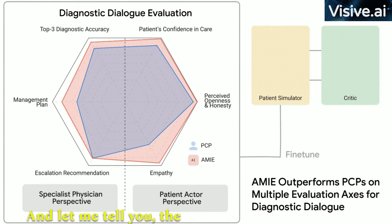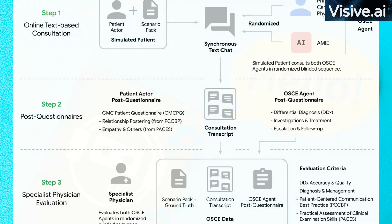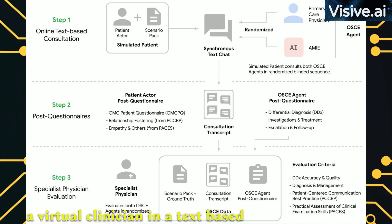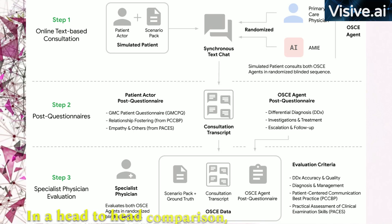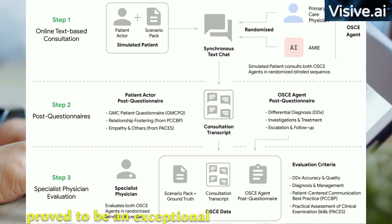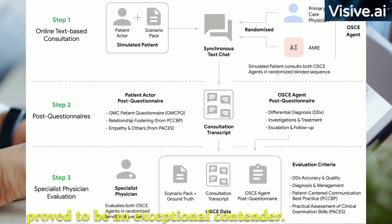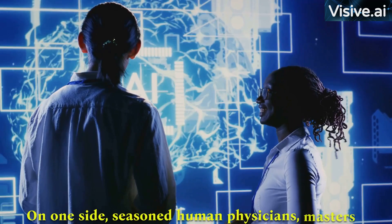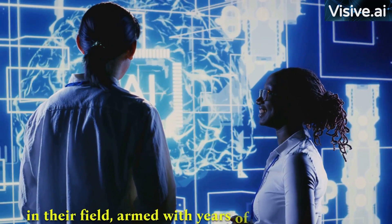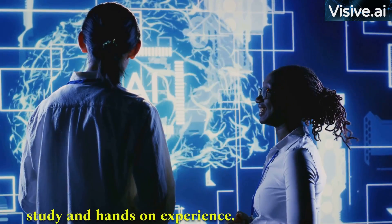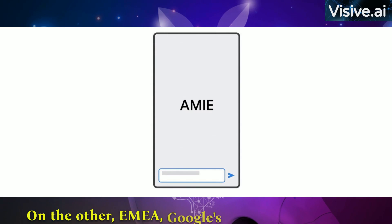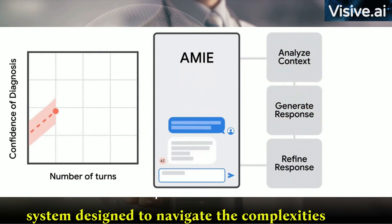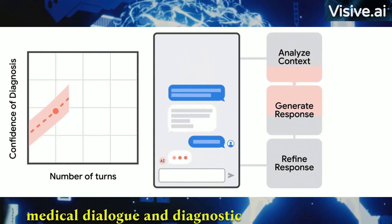The results were nothing short of astonishing. In a head-to-head comparison, AMIE proved to be an exceptional contender. On one side, seasoned human physicians — masters in their field, armed with years of study and hands-on experience. On the other, AMIE, Google's revolutionary AI system, designed to navigate the complexities of medical dialogue and diagnostic reasoning.